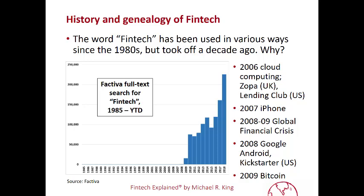The word FinTech itself has been around for a long time. Using a search on the search engine Factiva of all English language print and digital media, you can see the count of FinTech going back to 1985, with a spike that rises exponentially from 2008-2009 around the time of the global financial crisis. This exponential increase coincides with a number of different events. In 2006, we had Amazon's introduction of its cloud computing service, Amazon Web Services, as well as the launch in the UK of the peer-to-peer lender Zopa, and in the US of Lending Club.